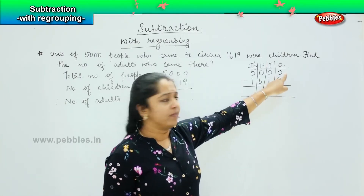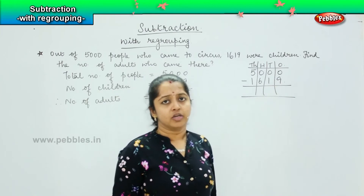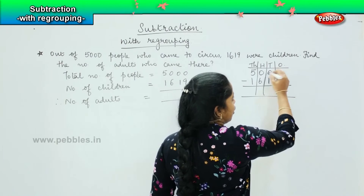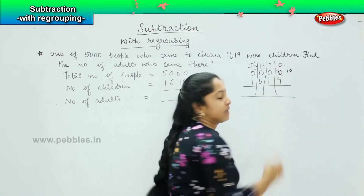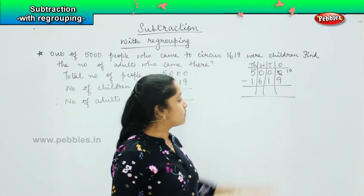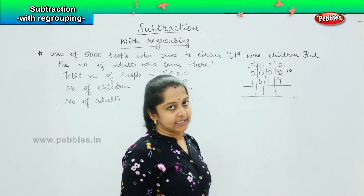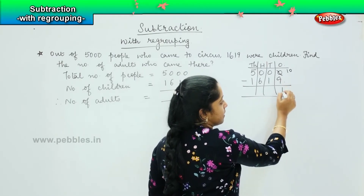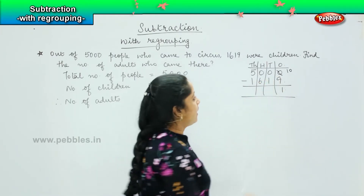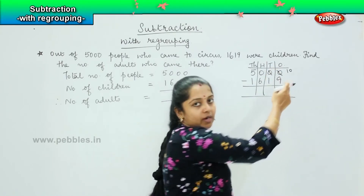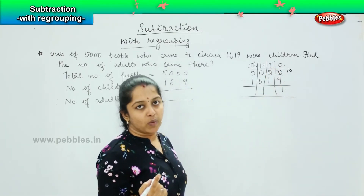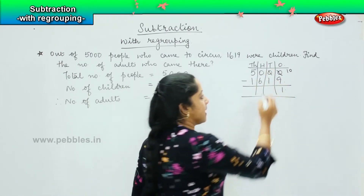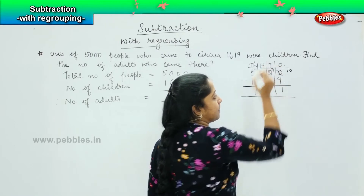It is not possible for me to subtract 9 from 0. So, what I will do is borrow from the tens place. When I borrow, the ones place will become 10. Now, is it possible to subtract 9 from 10? Yes, because 10 is larger than 9. So, 10 minus 9 becomes 1. Since this place borrowed 1, I will be reducing the tens digit by 1, so this 10 will become 9.